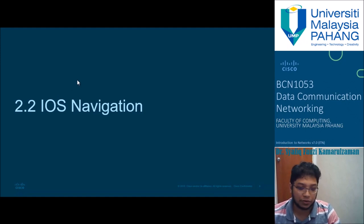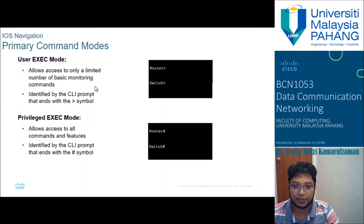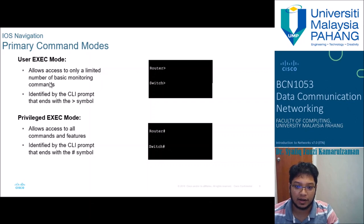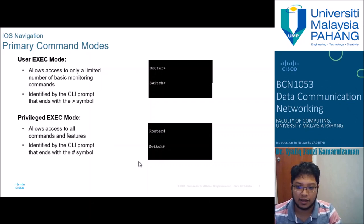Next, I would like to introduce the Cisco IOS navigation. The primary command modes are user exec mode and privileged exec mode. User exec mode allows access to only a limited number of basic monitoring commands, identified by the CLI prompt ending with the arrow symbol (>). Privileged exec mode allows access to all commands and features, identified by the hash symbol (#).